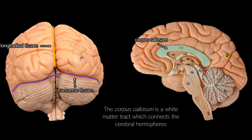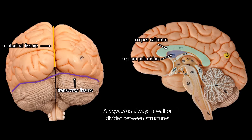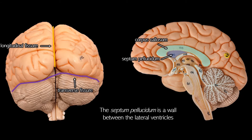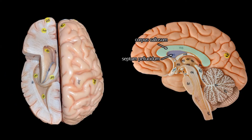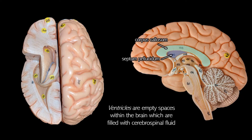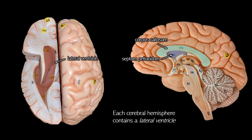If you look below the corpus callosum, you'll see the septum pellucidum. The word septum always means it's a wall or a divider between structures. The septum in your nose is the wall between your nostrils. The septum pellucidum is a wall between your ventricles. Ventricles are empty spaces within your brain which are filled with cerebrospinal fluid. Each half of the cerebrum has a lateral ventricle, and that's what the septum pellucidum is separating — those two lateral ventricles.